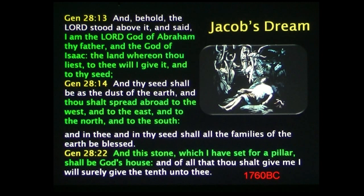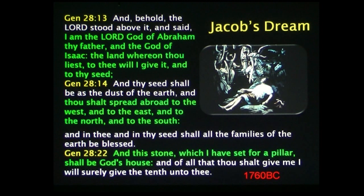Isaac of course was Jacob's father. 'The land whereon thou liest to thee will I give it and to thy seed, and thy seed shall be as the dust of the earth, and thou shalt spread abroad to the west and to the east and to the north and to the south. And in thee and in thy seed shall all the families of the earth be blessed, and this stone which I have set for a pillar shall be God's house.' I want you to remember that statement from God in this dream — that this stone was going to be God's house. This occurred in 1760 BC.